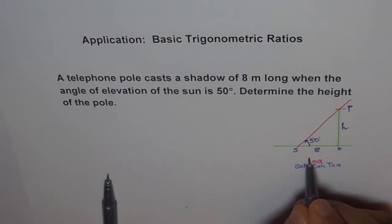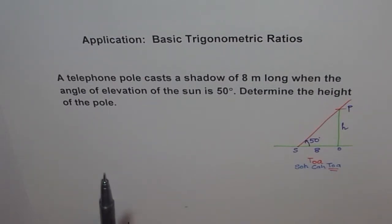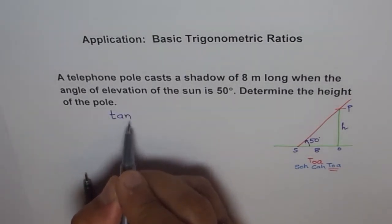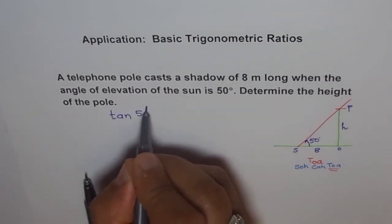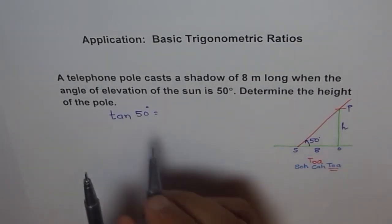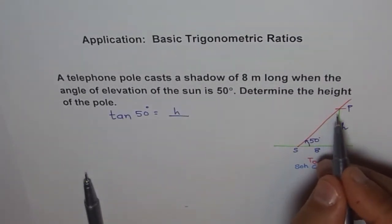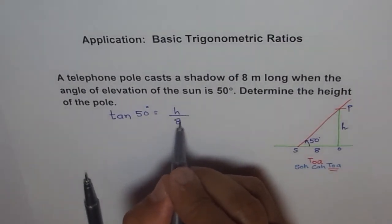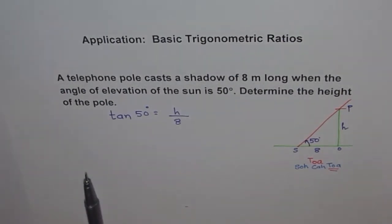I should be using tan here. So tan of 50 degrees equals the opposite side, which is OP, which equals H, over adjacent, which is SO, which is 8. This is tan of 50 degrees.